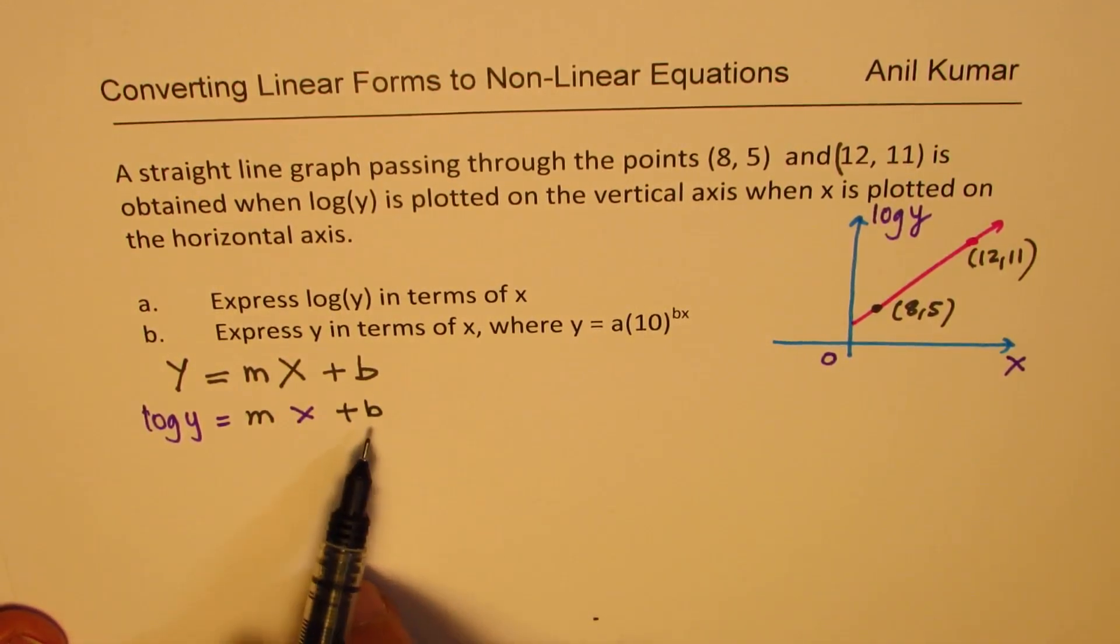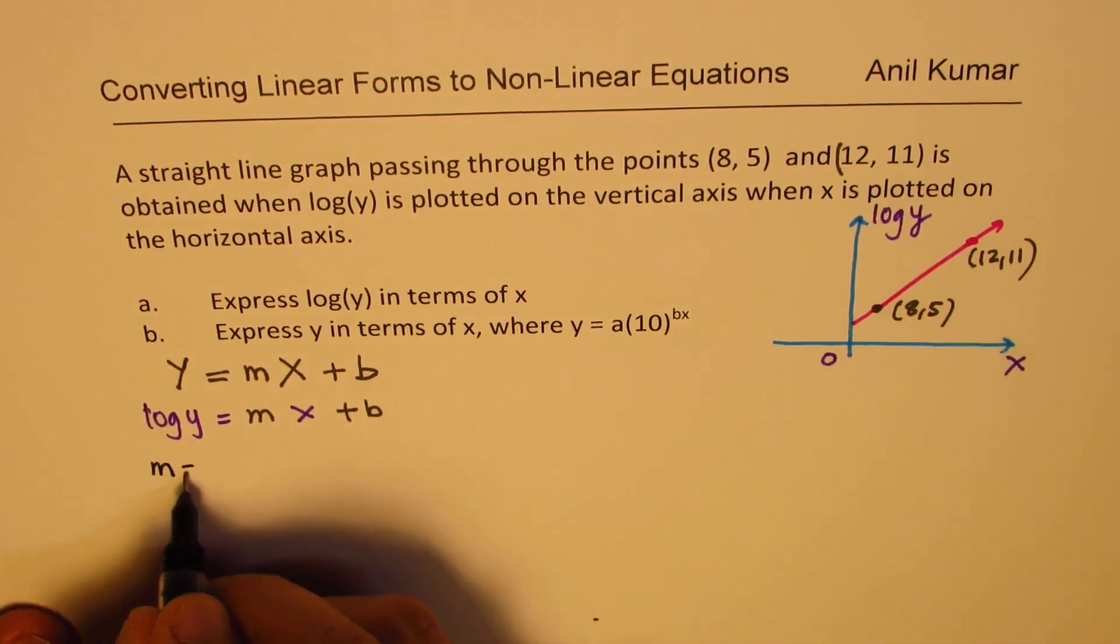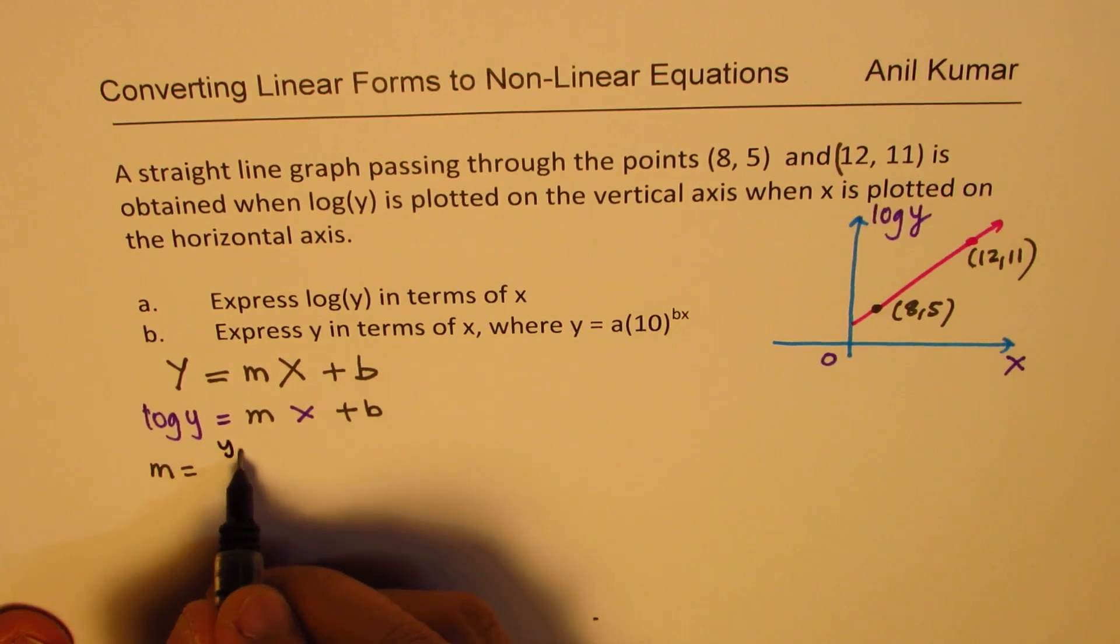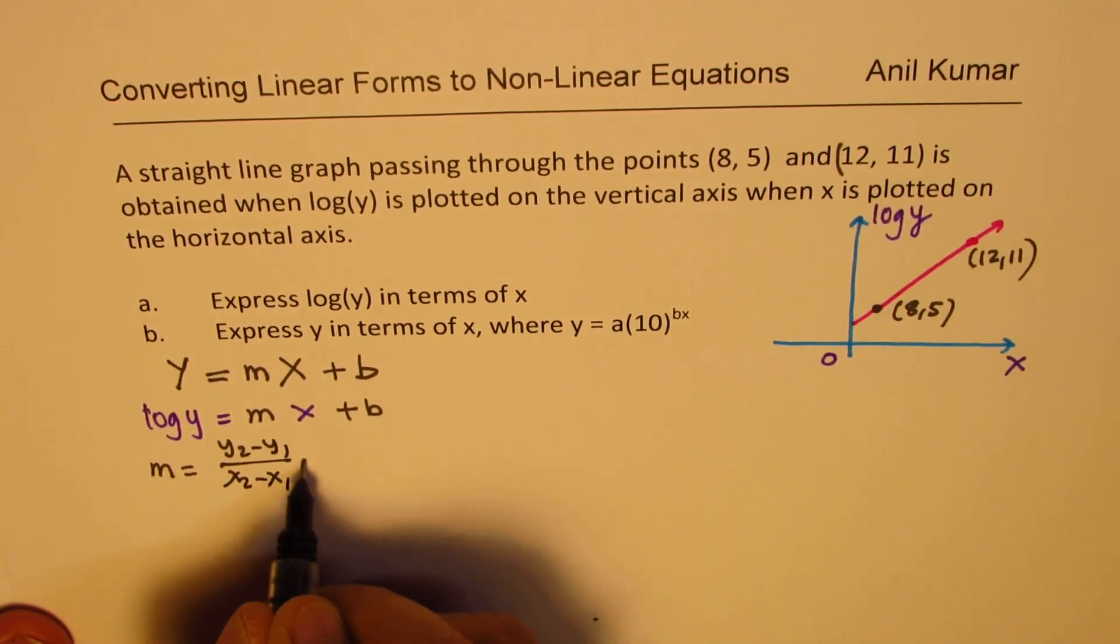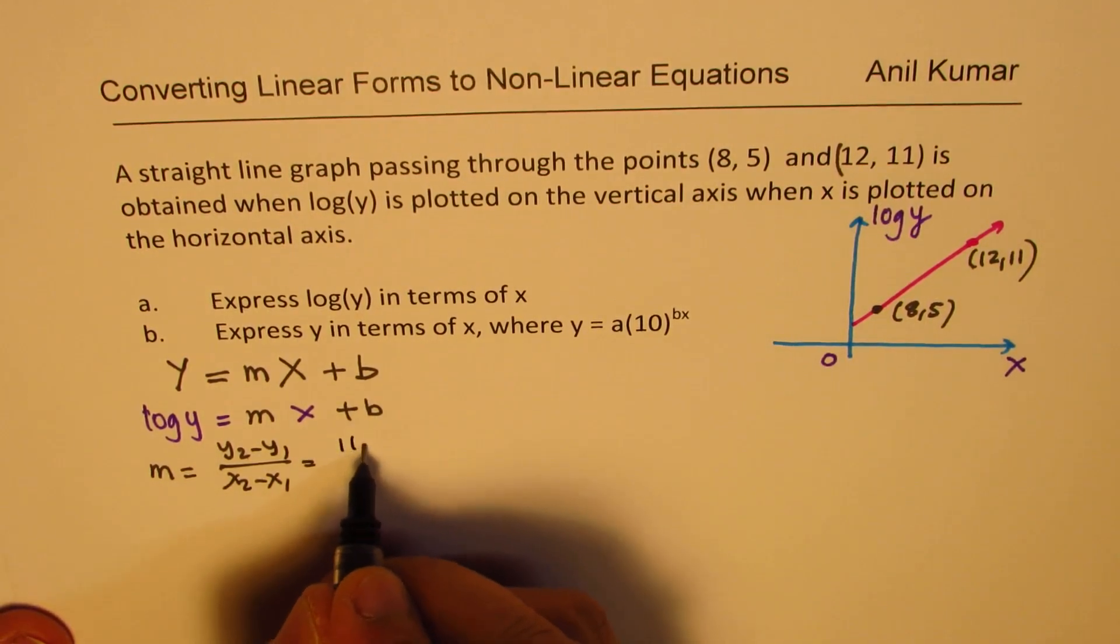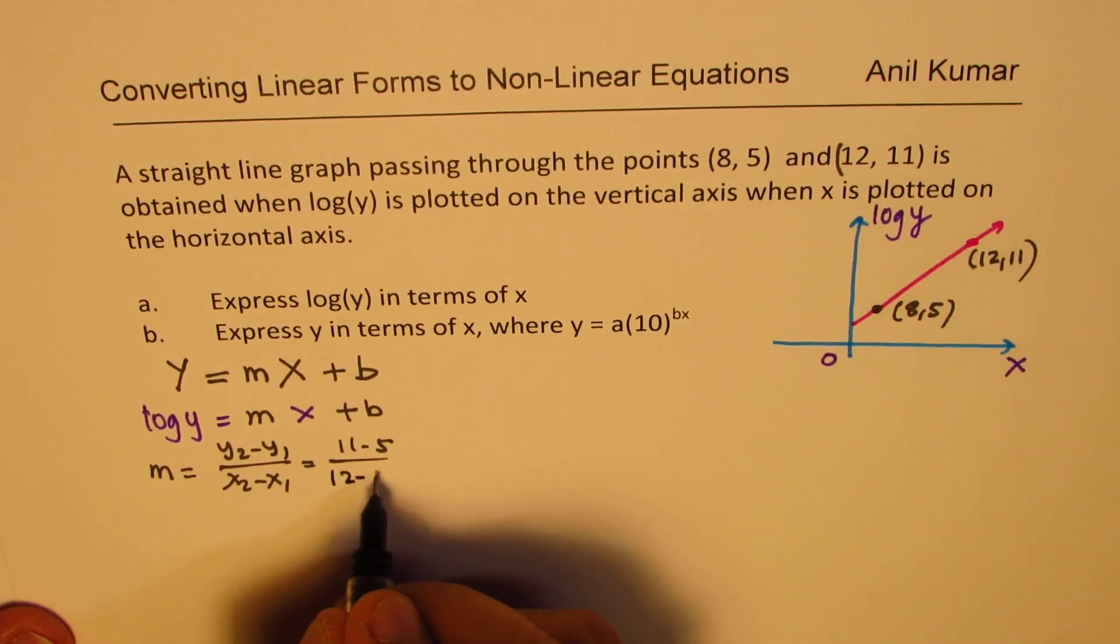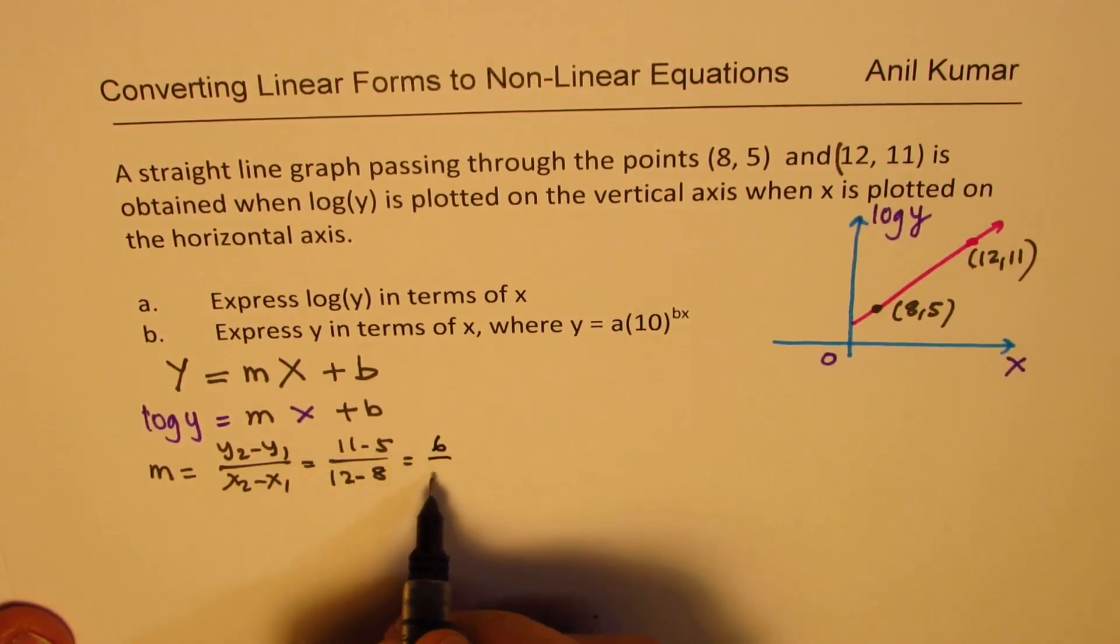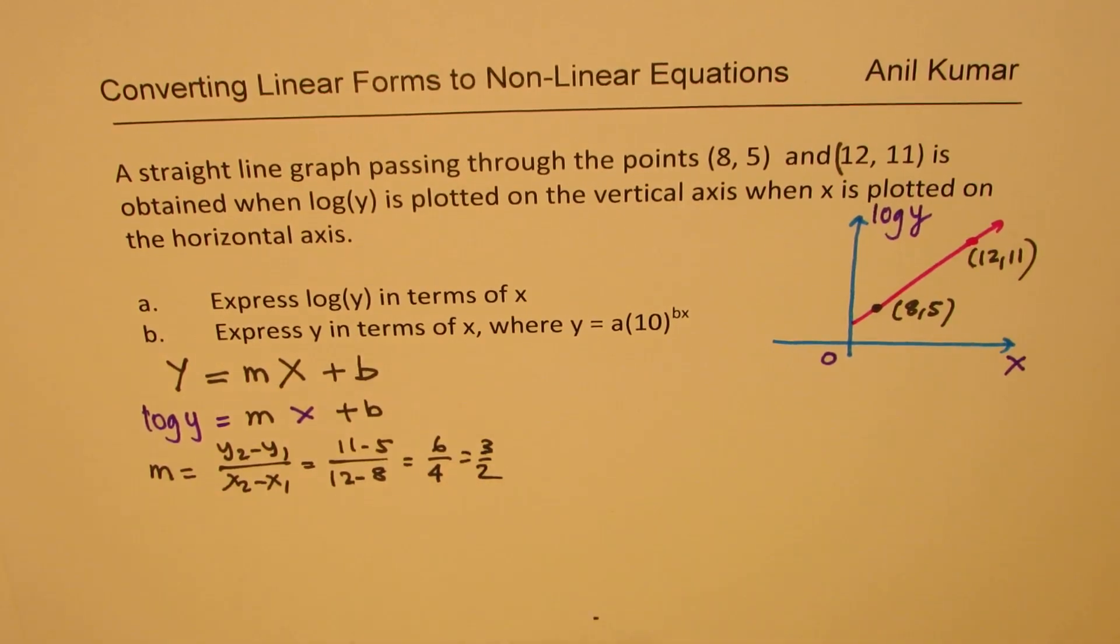Now how do I find m and how do I find b? It's a straight line basically, so m is the slope. Let's find m first. m is y2 minus y1 divided by x2 minus x1. So that means (11 - 5) over (12 - 8). So 11 minus 5 is 6 and that is 4, or we can write this as 3/2. So we get m as 3/2.